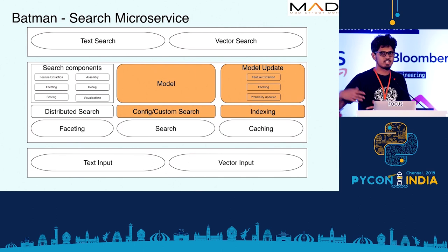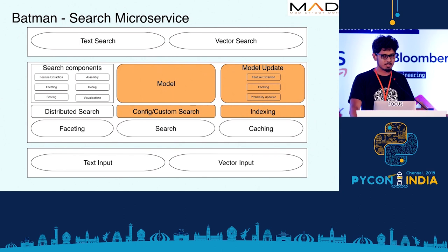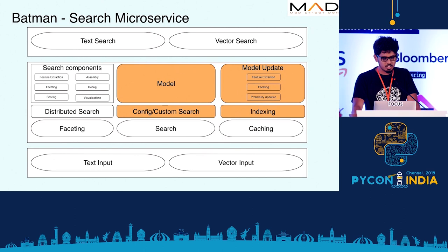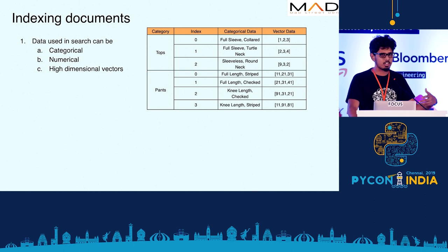Many of these components are common across different search engines that exist, but the four components I'm going to focus on — which differentiate our system for association — are indexing, search, model, and model update. The documents are indexed with categorical, numerical, and high-dimensional vector data, and we perform searches on all three of these data types.